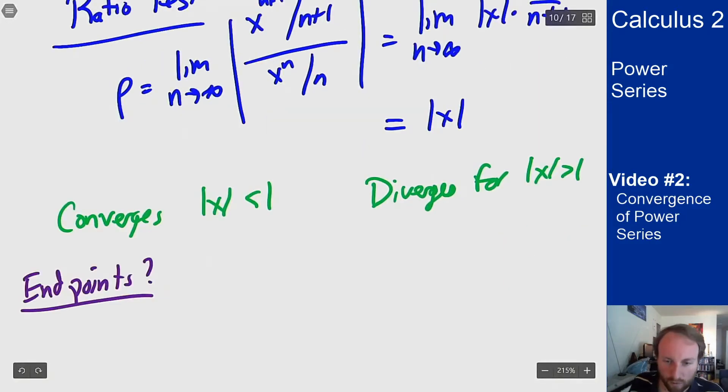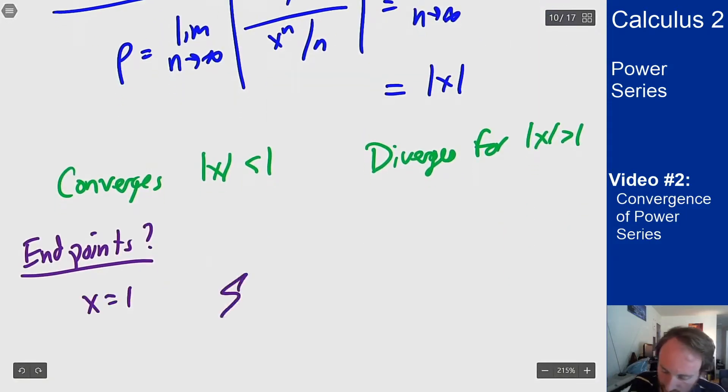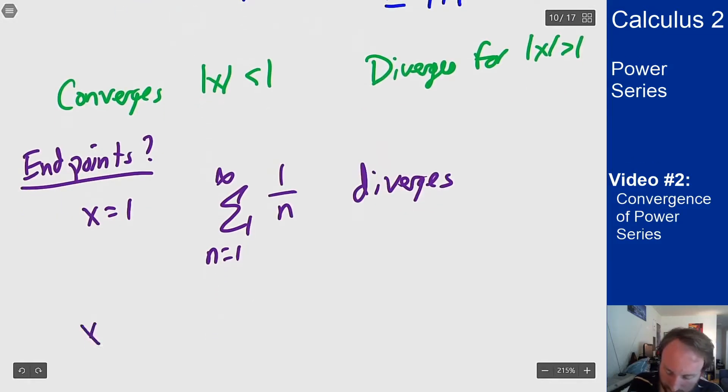What about the endpoints? Well if x equals 1 then my series becomes sum from 1 to infinity of 1 over n and this diverges by p-series. If I look at x equals minus 1 I get sum n from 1 to infinity of (-1) to the n over n and this converges by the alternating series test.